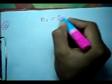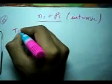Let's discuss how this equation came about. For an intrinsic semiconductor, we get Ni equals Pi. Now suppose T is equal to 300 K. This equation works at thermal equilibrium — we will discuss why.